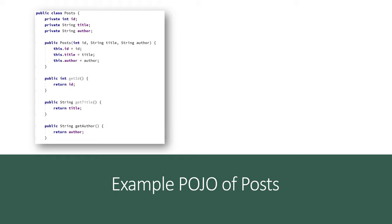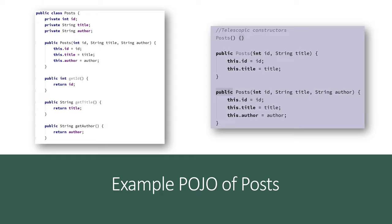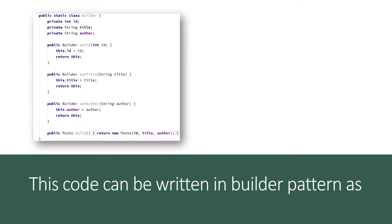With only three properties, there is still a lot of permutations and combinations of constructors that can be created: a default constructor, a constructor with one parameter, two parameters, three parameters, and mixed combinations like ID with author, ID with title, title with author, and so on. These are called telescopic constructors, and they can become very complex when the object gets more complex. The builder pattern comes in to resolve these kinds of situations.